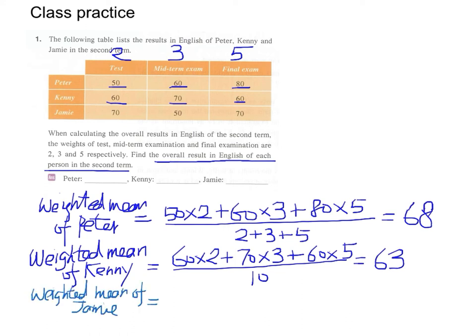The weighted mean of Jamie. We have 70, 50, 70 times 2 and then 50 times 3 plus 70 times 5. Divide this by 10. We have 64.